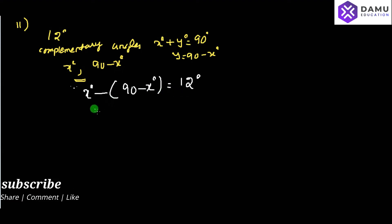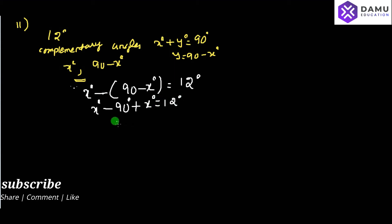Then, x minus — we need to multiply — minus 90 degrees, and minus into minus gives plus x degrees, will be equal to 12 degrees. So here, x plus x gives 2x. Therefore, 2x degrees minus 90 will be equal to 12 degrees.